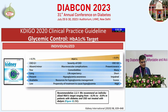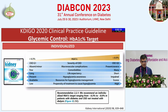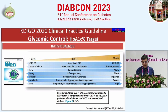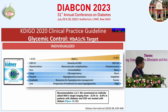Not the same shoe size fits all. KDIGO accepts this and recommends individualization of HbA1c targets based on the population. For patients in CKD stage 1 and 2, target HbA1c of 6.5 or less is appropriate. For stage 4 and 5, I am very apprehensive about reducing HbA1c aggressively and keep it near 7 to 8. For patients with shorter life expectancy or poor hypoglycemic awareness, you target the individual, not the value.